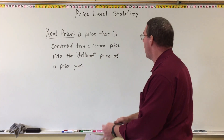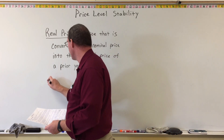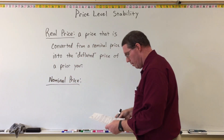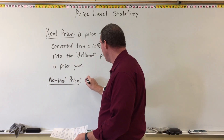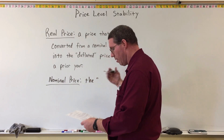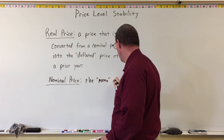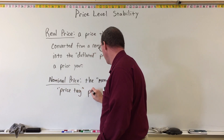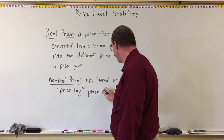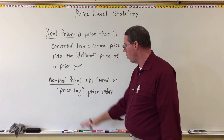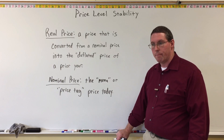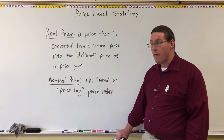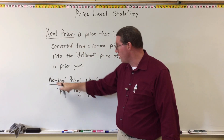In order for you to understand this, we first need to define what nominal price means. A nominal price — this is my definition, not a technical definition — it's the menu or price tag price today. What you would see today on the menu at a restaurant or on a price tag at the store. So if you go into Panera and want to buy a bowl of soup and it says $5.39, that price you're seeing right there today on the menu, that is called the nominal price.